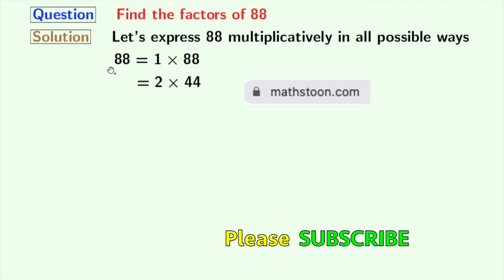The next number 3 does not divide 88, and next comes 4. We have 4 times 22 equals 88. Next numbers 5, 6 and 7 do not divide 88, so we will try for 8 now. Let's see that 8 times 11 equals 88.